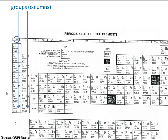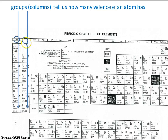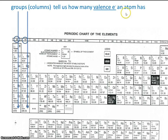You'll also notice that there's a naming system here — this is 1A, 2A. We're not going to do too much with that right now, but the groups tell us how many valence electrons an atom has. We haven't learned what valence electrons are yet, but we'll get to that.